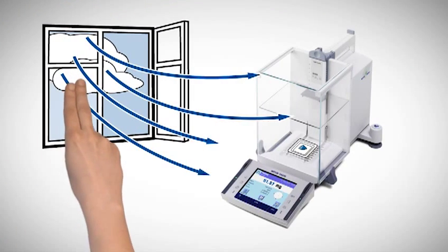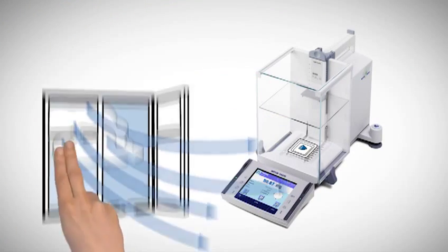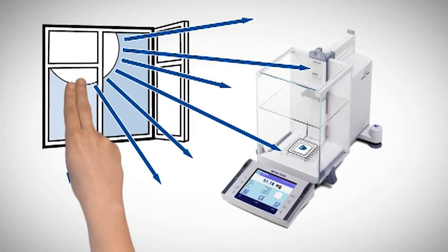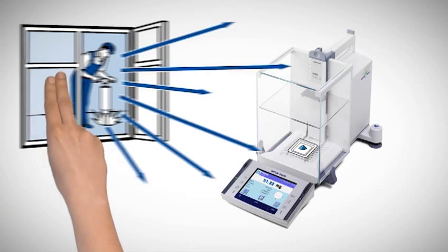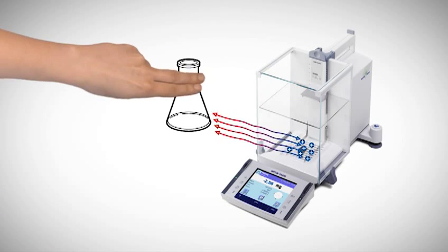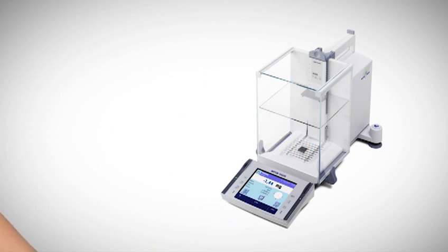USP 1251 provides practical recommendations for the qualification and operation of balances. Among others, it describes several environmental factors that can influence the performance of a balance — for example, air currents, temperature variations, vibrations, electrostatics, and many more.